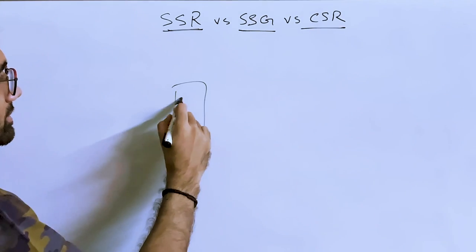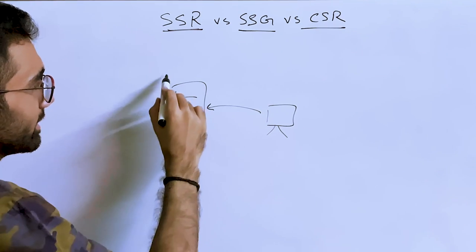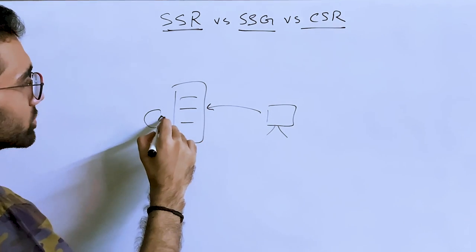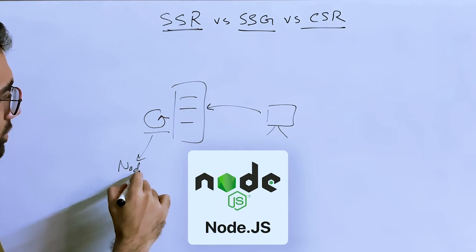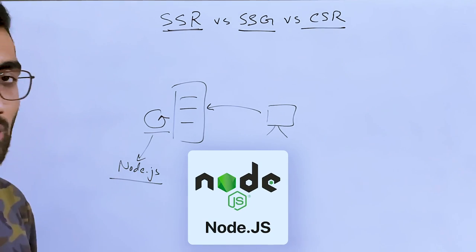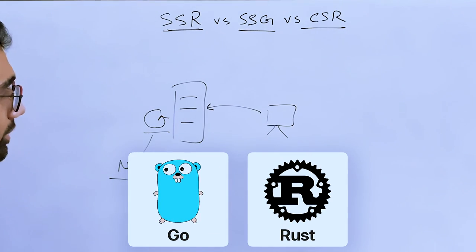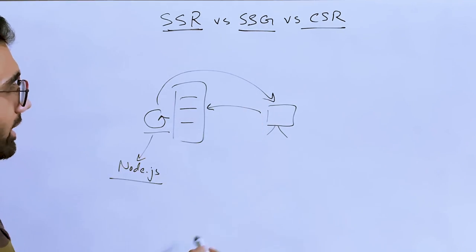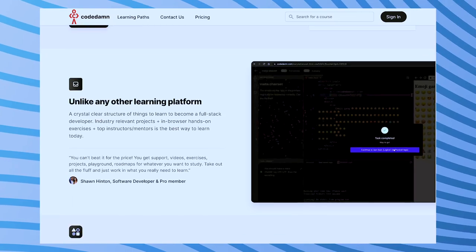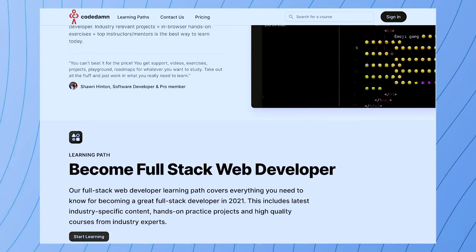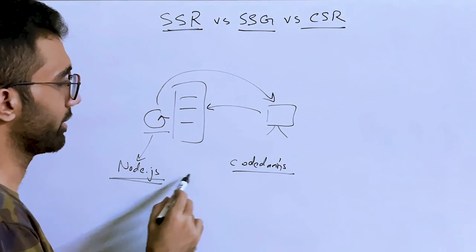The problem with server-side rendering is that on every single request, you're going to the server and computing a page, which takes CPU cycles. This is especially costly in Node.js compared to languages like Go or Rust. If your page is essentially static — like a home page that doesn't customize much per user — you're wasting CPU cycles.